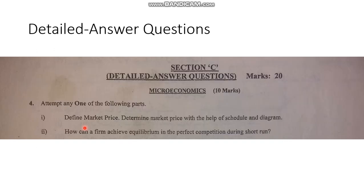Section C contains detailed answer questions, and 20 marks are allocated for this section — microeconomics 10 marks and macroeconomics 10 marks. Two questions are given in question number four and question number five, as stated earlier, and you have to attempt any one of the following parts.